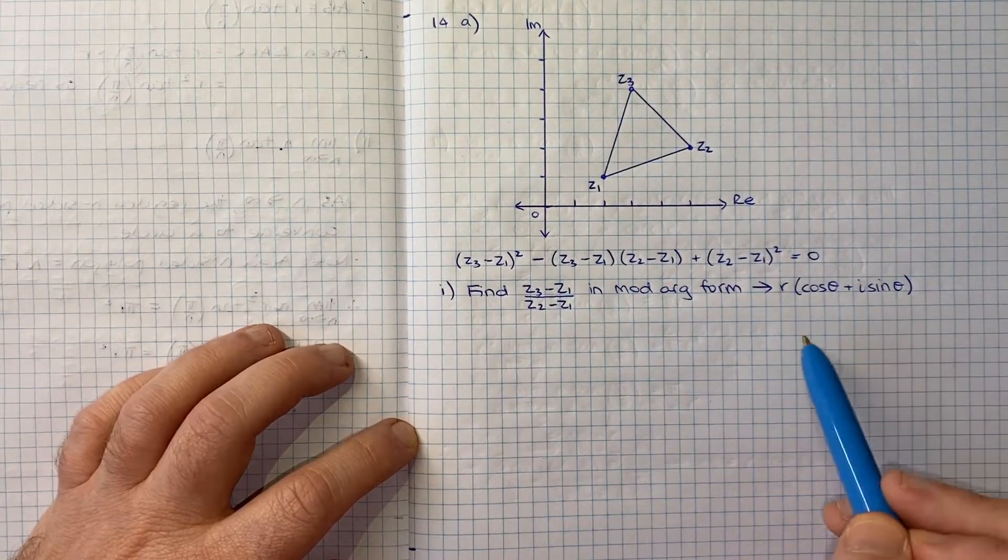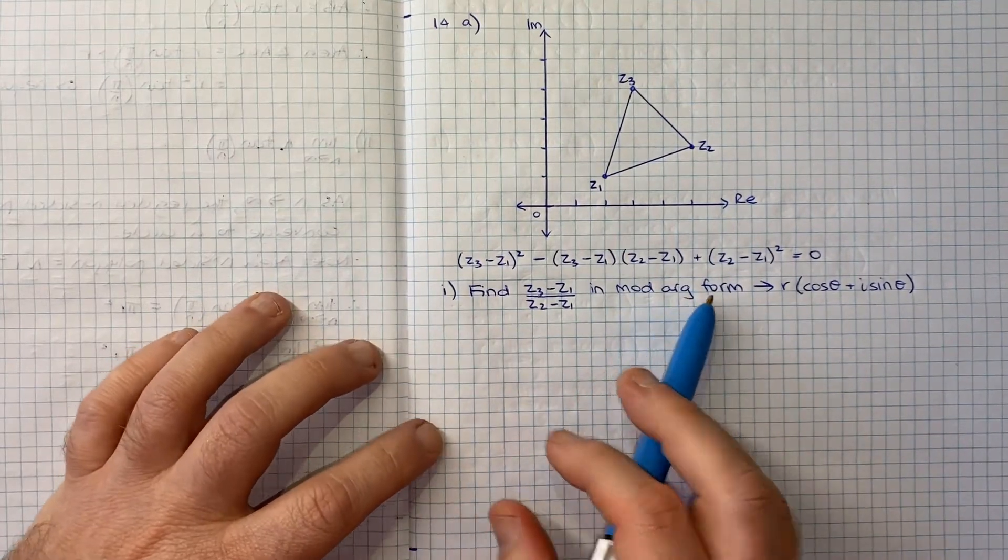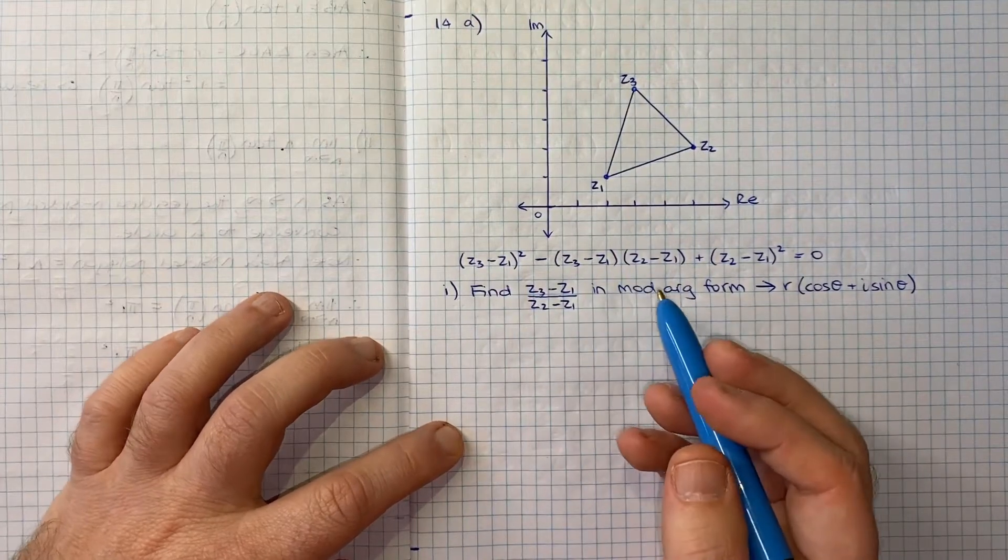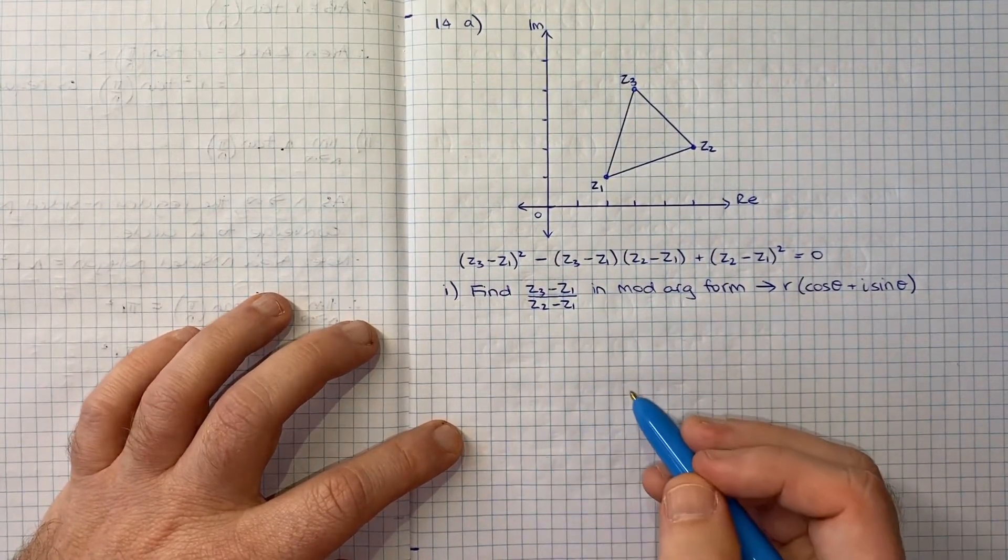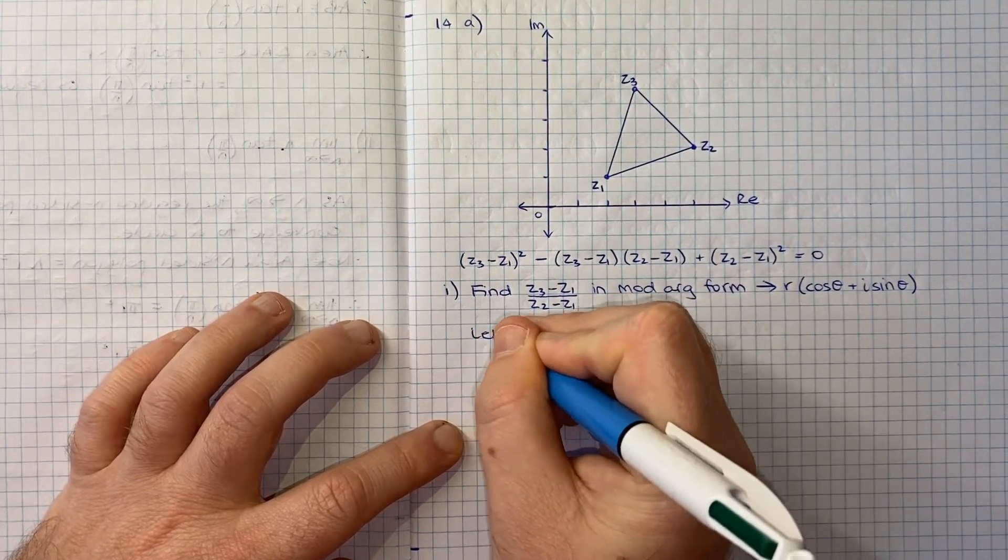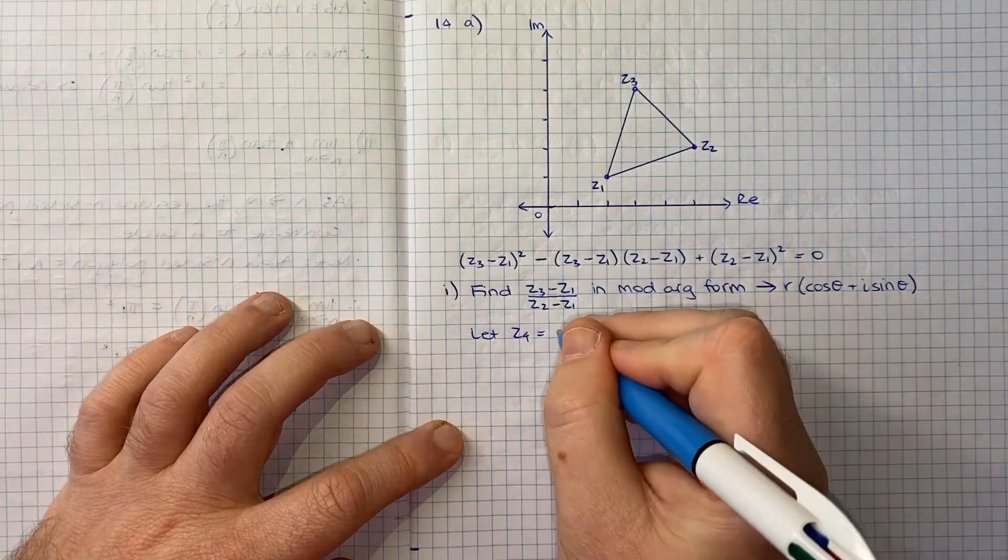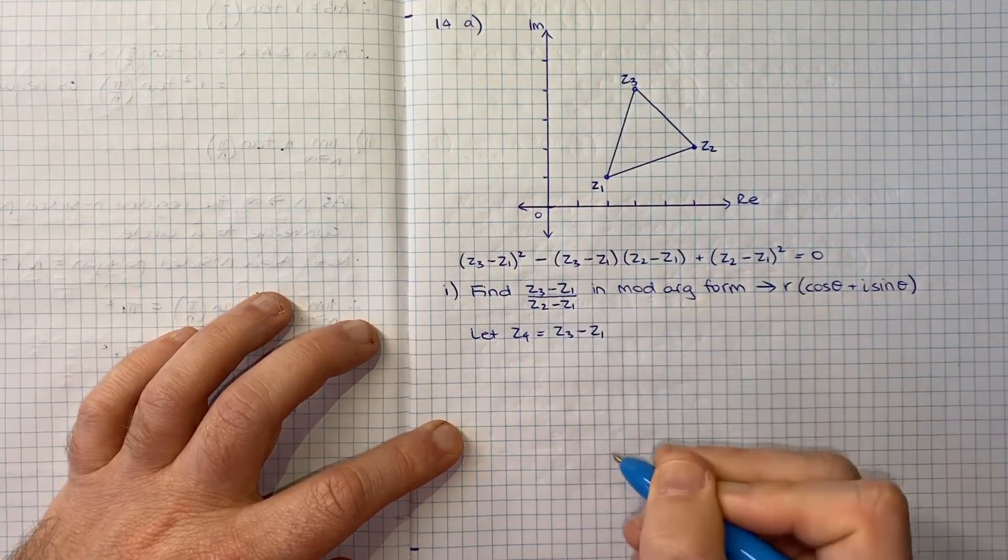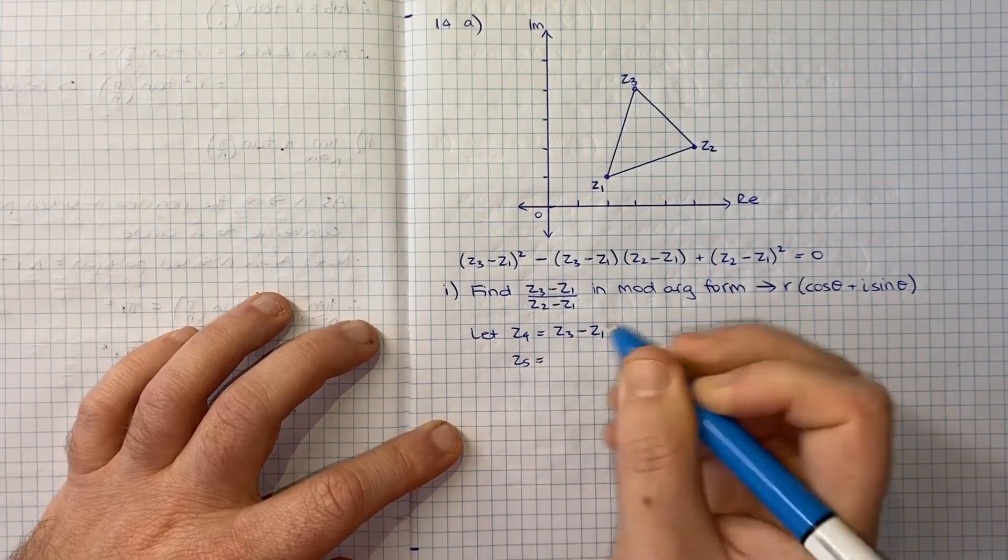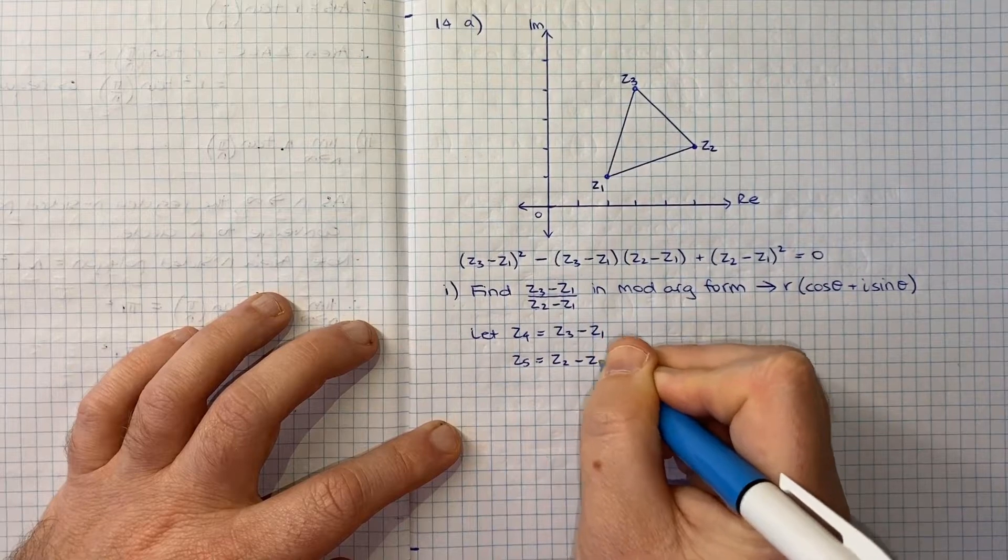I think what might be helpful is to define a few things, create some more Zs to help simplify our notation. I'm going to let Z4 equal this numerator, Z3 minus Z1, and then I'll let Z5 be equal to the denominator Z2 minus Z1.